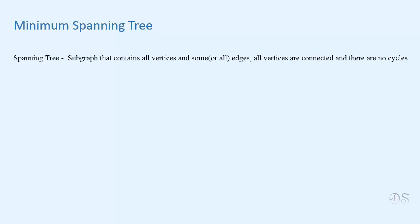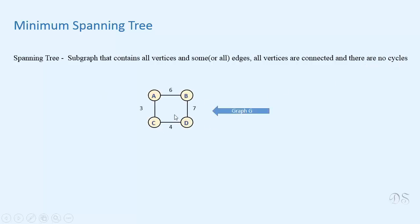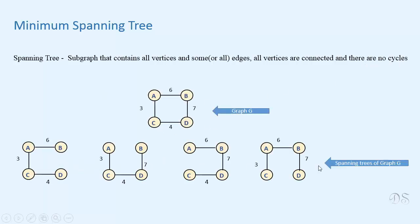A spanning tree of a connected graph G is a subgraph T that includes all vertices of G and some or all edges of G such that all vertices are connected and there are no cycles. For example, for this graph G, these are all spanning trees. These are the weights of these spanning trees — the sum of weights of edges included in the tree.